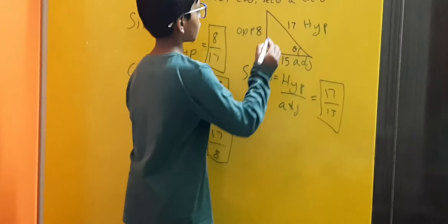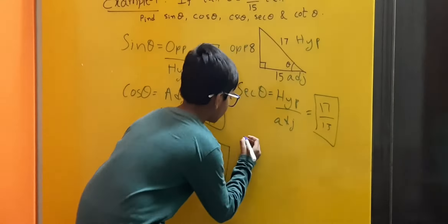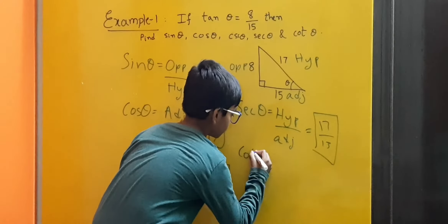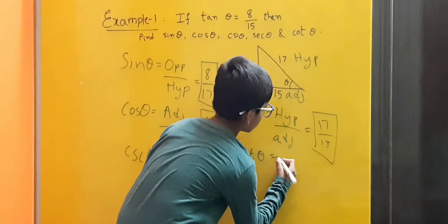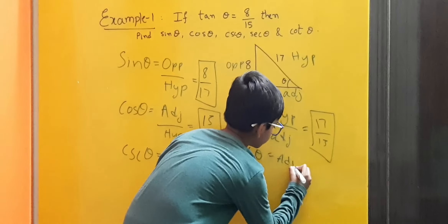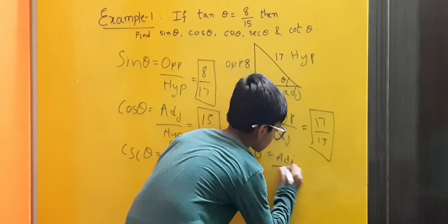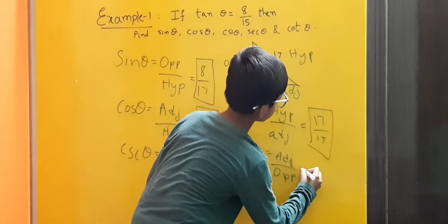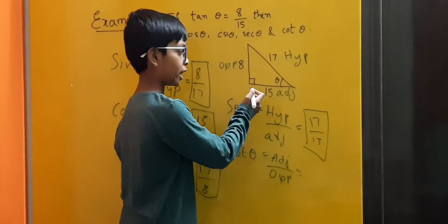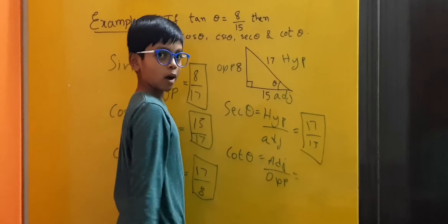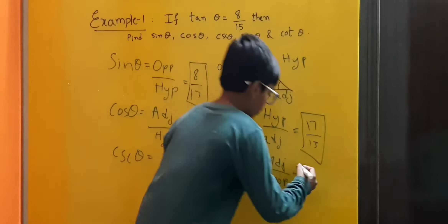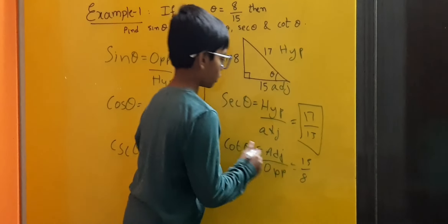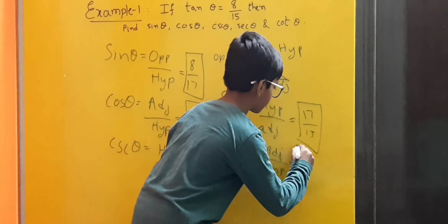Now let us find cotangent theta. We have the formula: cotangent theta is equal to adjacent by opposite. Here, 15 is the adjacent and 8 is the opposite, so we write 15 by 8. Therefore, cotangent theta is equal to 15 by 8.